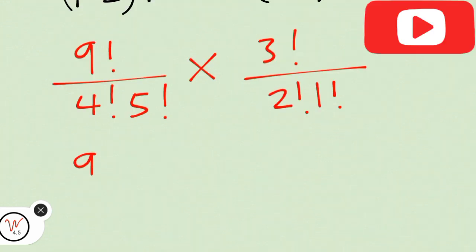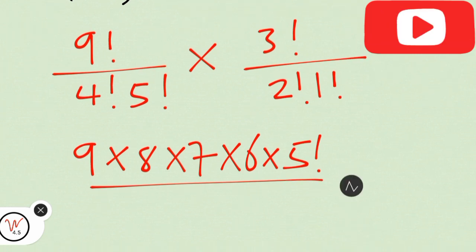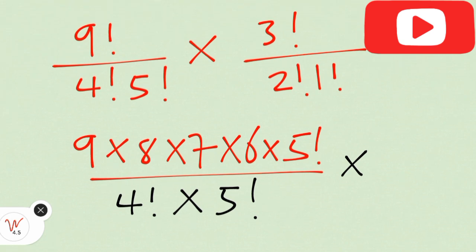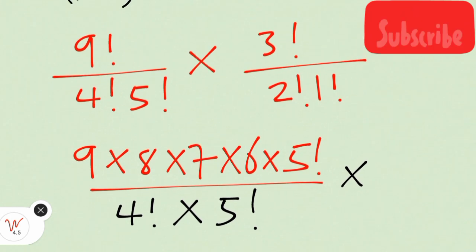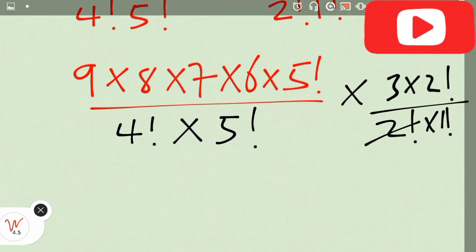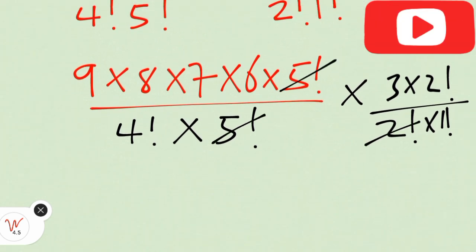Nine factorial is nine times eight times seven times six times five factorial. I stopped at five factorial because I know I have five factorial at the denominator level and I want that to cancel. This is times three factorial which is three times two factorial over two factorial times one factorial. Two factorial cancels with two factorial and five factorial cancels with five factorial.